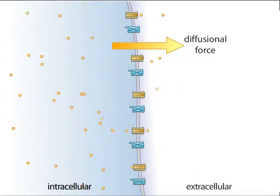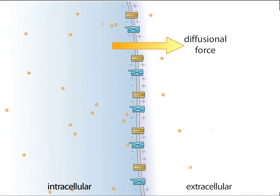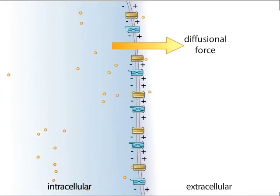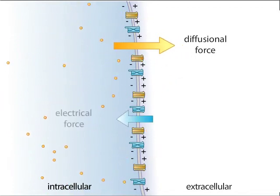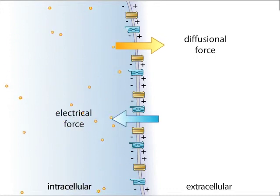The movement of potassium ions out of the cell increases the internal negative charge. The positively charged potassium ions are attracted to the internal negative charge, and this electrical force pulls potassium ions back into the cell.